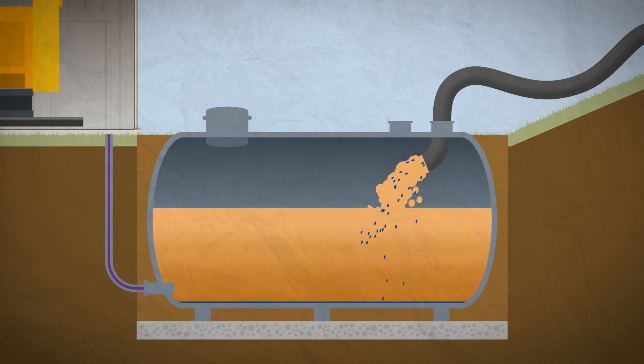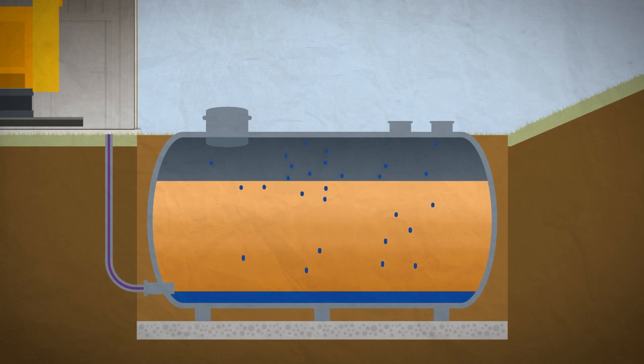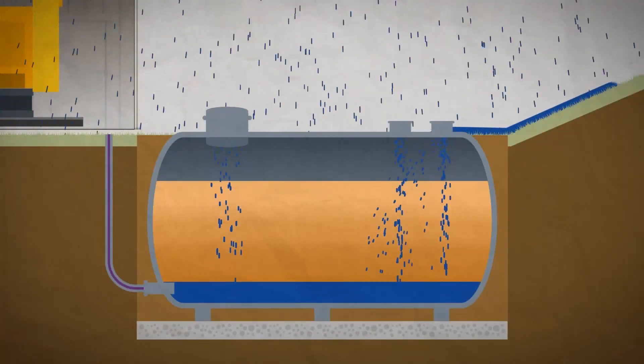Water can enter a fuel tank in a number of ways, such as the delivery of contaminated diesel from a supplier, condensation collecting inside storage tanks or vessels, rainwater entering through hatches or enclosures, and wash-down water through breathers or vents.